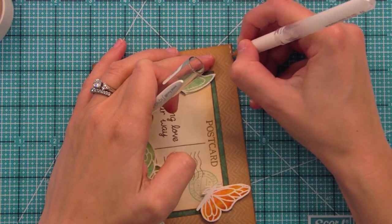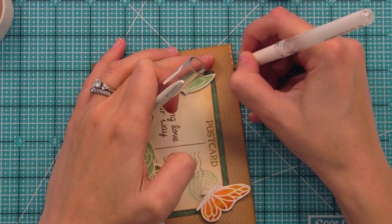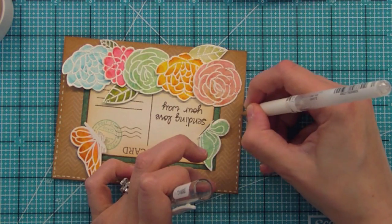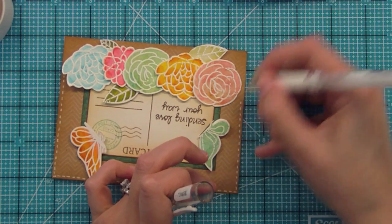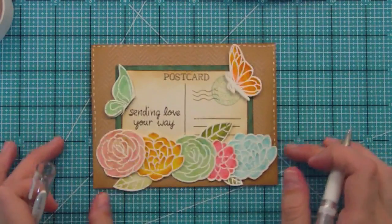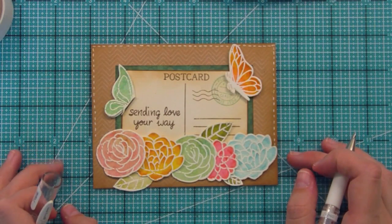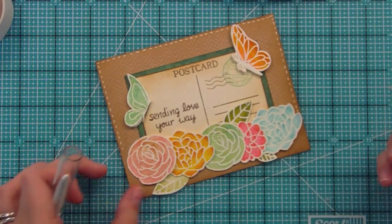I decided some white stitching lines would look really good on this card because we used the white heat embossing powder and everything else was cream or brown. I thought the white stitching lines would really bring that white heat embossing powder into the whole card and look really great.